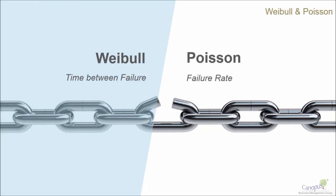Weibull distribution and Poisson distribution have a very strong connection. If you recollect our discussion on Weibull, the hazard curve would be a failure rate curve, and it's likely to be something like a Poisson distribution. Weibull captures the absolute time — specifically the time between failures — whereas Poisson captures the rate at which failures are happening. Let's look at some more examples so that this concept is clear.